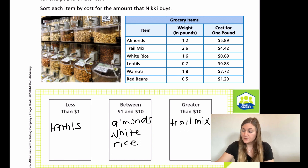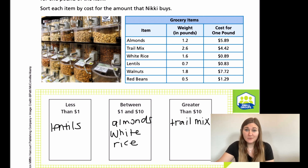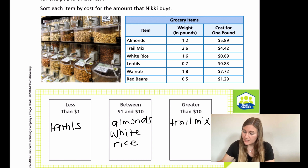For the walnuts, we have 1.8 pounds, so let's just round up to about two times the price. We have $7.72, and double $7 means it's going to be about $14. So it's definitely going to be greater than $10. We put walnuts underneath the trail mix in the greater than $10 category.